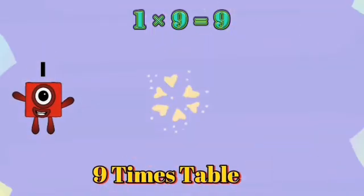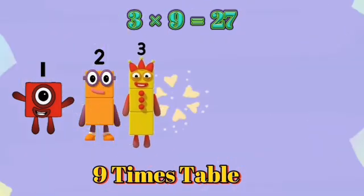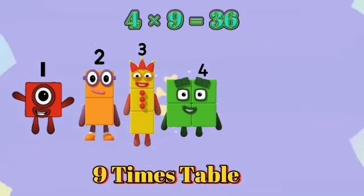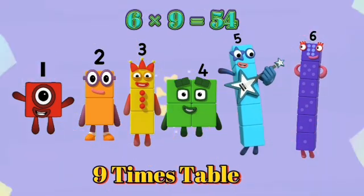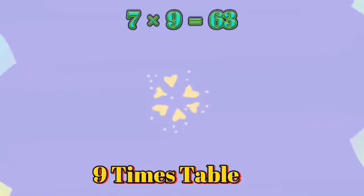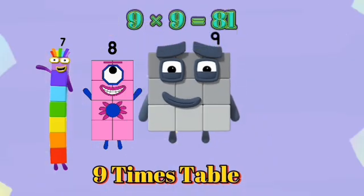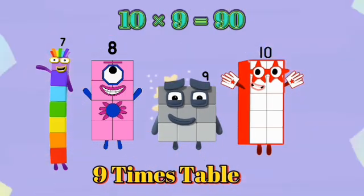1 times 9 is 9. 2 times 9 is 18. 3 times 9 is 27. 4 times 9 is 36. 5 times 9 is 45. 6 times 9 is 54. 7 times 9 is 63. 8 times 9 is 72. 9 times 9 is 81. 10 times 9 is 90.